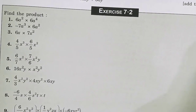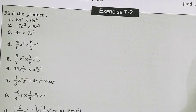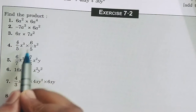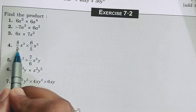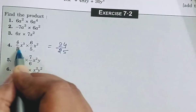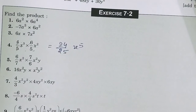Question number 2: minus 7a³ multiplied by 6a². Since the first is negative and 6 is positive, the answer will be negative — keep this in mind. Question 3 and 4 are assignment work. A hint for Question 4: multiply numerator by numerator — 6 × 4 = 24; denominator by denominator — 5 × 5 = 25. So we get 24/25, and since x has the same base, the powers add up to give x to the power 5.